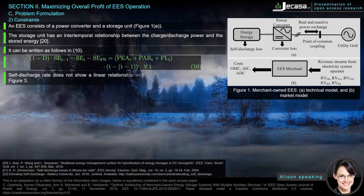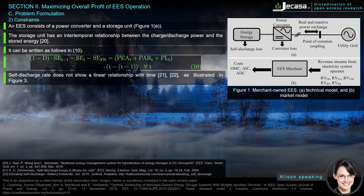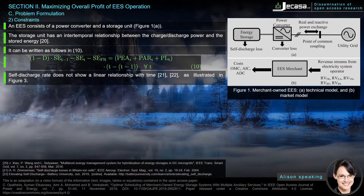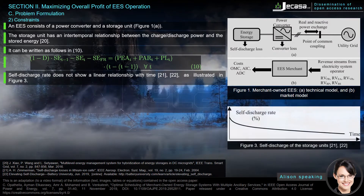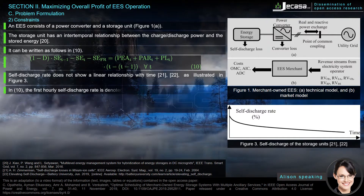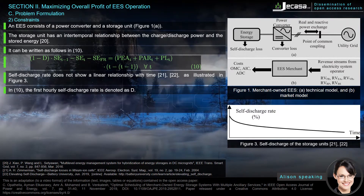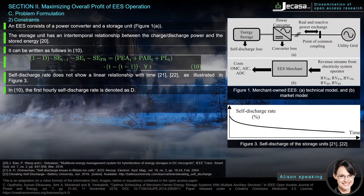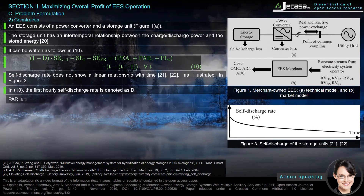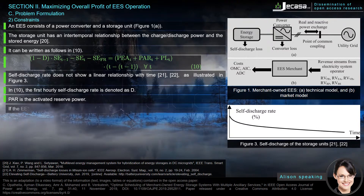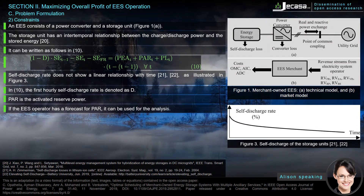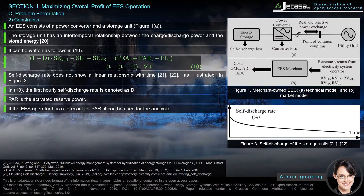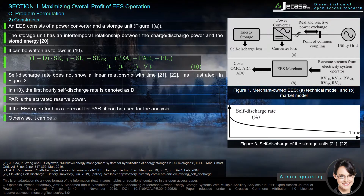The self-discharge rate does not show a linear relationship with time, as illustrated in Figure 3. In equation 10, the first hourly self-discharge rate is denoted as d. P_AR is the activated reserve power. If the EES operator has a forecast for P_AR, it can be used for the analysis; otherwise it can be set to zero.